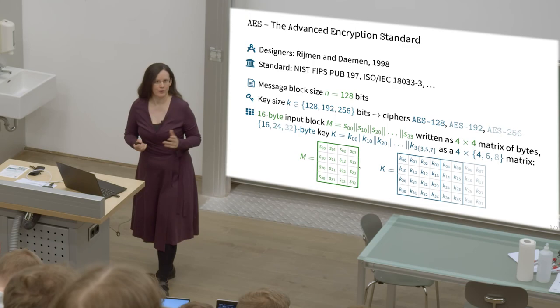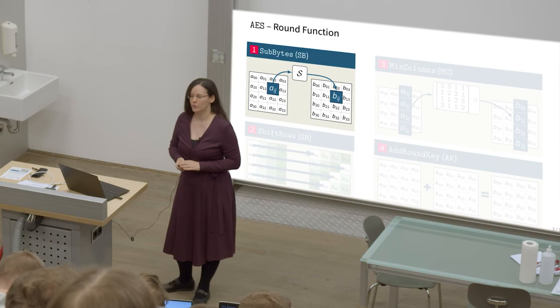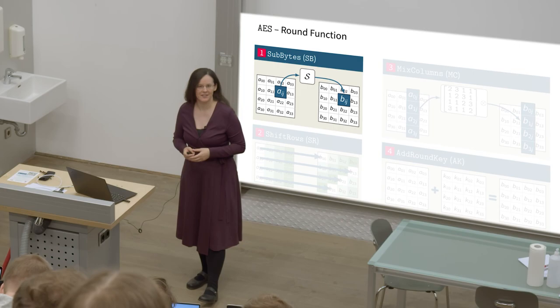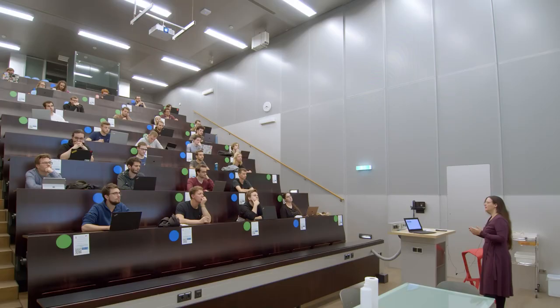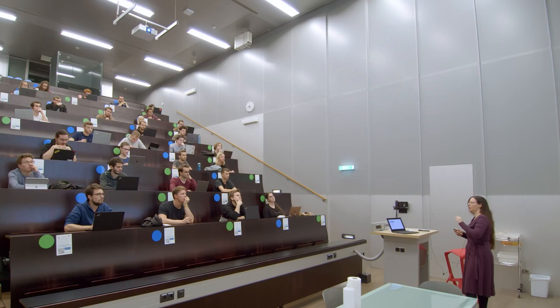We have a total of four operations in each round, and the first one of them is called SubBytes, which is short for byte substitution. It takes each byte in this 4x4 state and replaces it according to some lookup table. Each byte is replaced according to this lookup table.